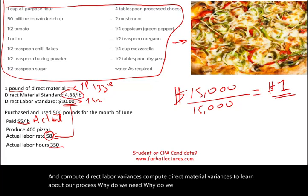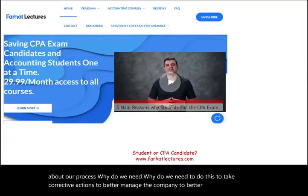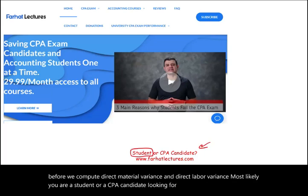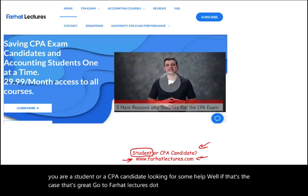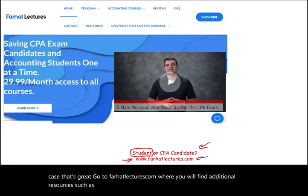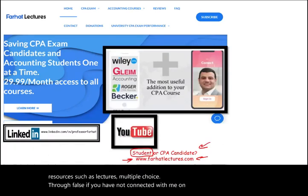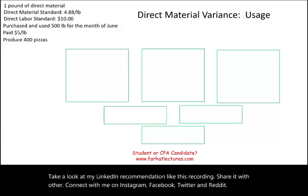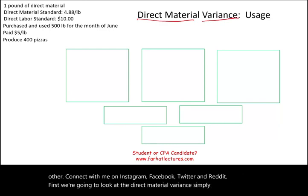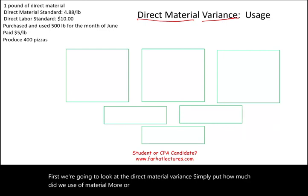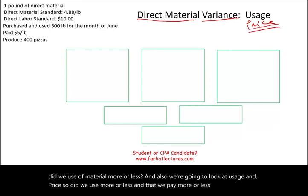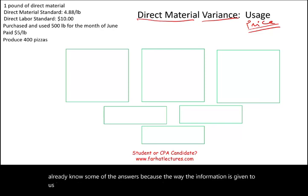We're going to take this data and compute direct labor variances and direct material variances to learn about our process. Why? To take corrective actions, to better manage the company, and to better control cost. I'm going to use what we call the three-column method. Column one is actual cost, column three is standard cost (sometimes called flexible cost), and column two is in the middle.